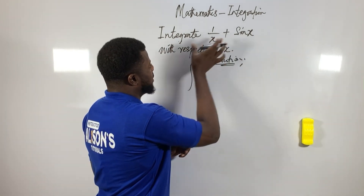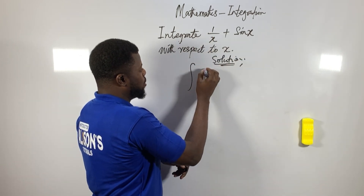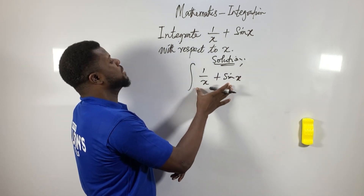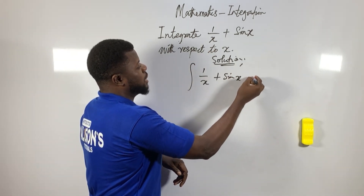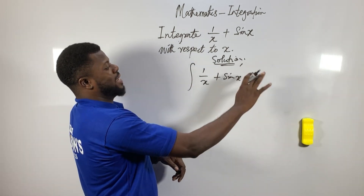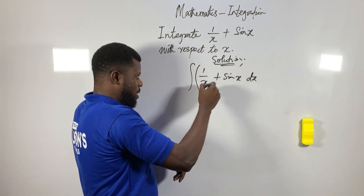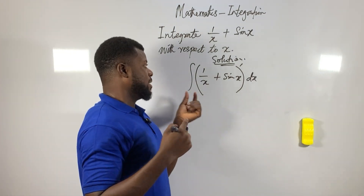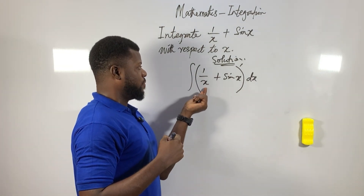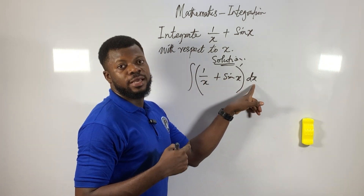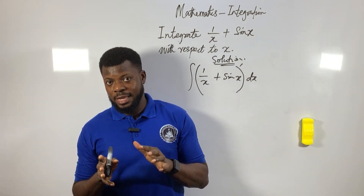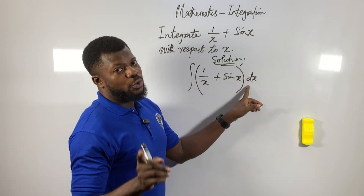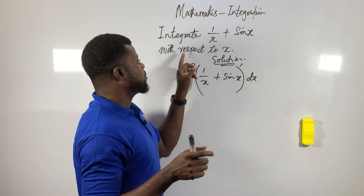Normally you are supposed to write it as: the integral sign, then (1/x + sin x), then with respect to x — meaning you close it with dx. Just like that. You know you carry it, you cover it, you're not doing anything strange. So we have: integrate (1/x + sin x) with respect to x.